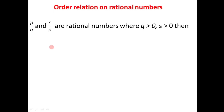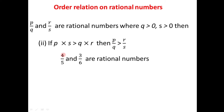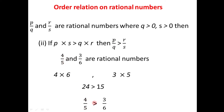The second rule: if the first product is greater than the second, the first number is greater than the second. Take two numbers 4 divided by 5 and 3 divided by 6. The product of 4 and 6 is 24, and the product of 3 and 5 is 15. Since the first product 24 is greater than the second 15, the first number must be greater, so 4 divided by 5 is greater than 3 divided by 6.